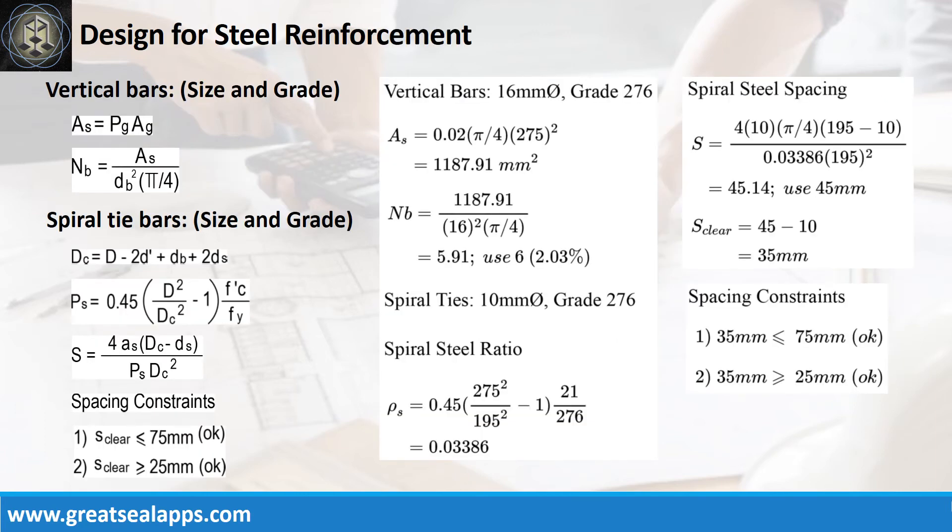Given steel ratio equals 2% and diameter equals 275 millimeters, the area of steel is 1187.91 square millimeters. The number of vertical bars for 16 millimeter bar is 6.